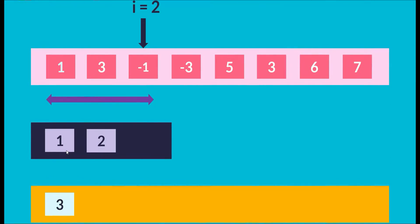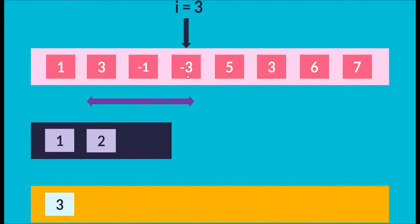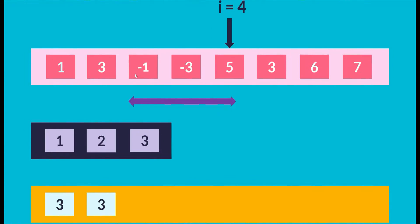We move to the next element. Our sliding window is now [3, -1, -3]. Since -3 is smaller than -1 at the back of the DQ, we just push index 3 onto the DQ. The maximum is again at the front — index 1, element 3 — so we push 3 onto the output again. Moving to index 4, our sliding window becomes [-1, -3, 5]. Index 1 is no longer part of this window, so we need to pop it out.